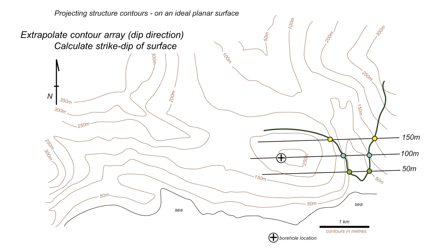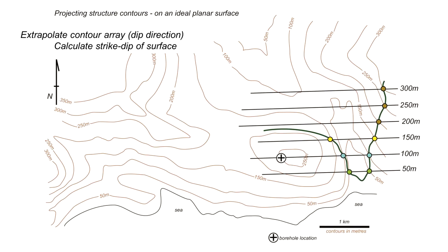Next, we extrapolate the structure contour array in the dip direction to calculate the strike and dip of the geological boundary. Identifying more intercepts between the topographic contours and the boundary — at 200, 250, and 300 metres as the boundary tracks up the hillside — we can extrapolate the structure contours parallel to those already drawn, creating a full array of structure contours.